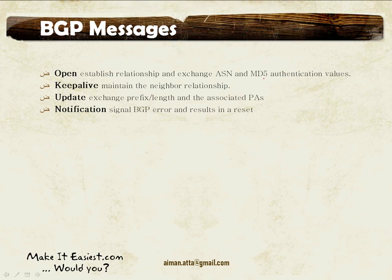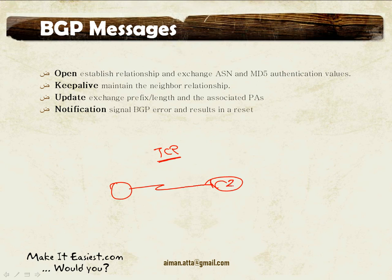Regarding BGP message types: BGP first establishes a TCP session between two routers using the Open message. To maintain the neighbor relationship, BGP uses Keepalive messages — similar to hello messages in OSPF and EIGRP. Whenever BGP has routing information to share, it sends an Update message containing prefixes and attributes. Whenever it needs to signal an error, it sends a Notification message.